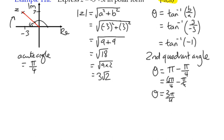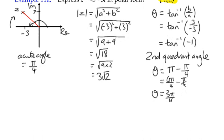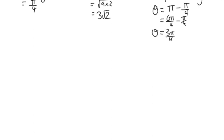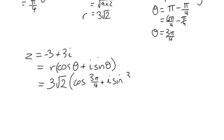We don't need to use a negative value here because 3 pi over 4 is less than pi radians. We only use negative angles for third or fourth quadrant angles. So our complex number, originally negative 3 plus 3i, can be written in polar form as 3 root 2 times (cos(3π/4) + i sin(3π/4)).